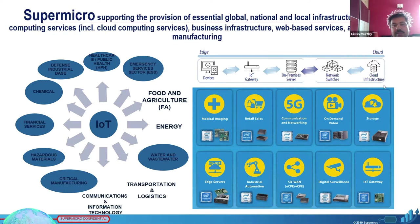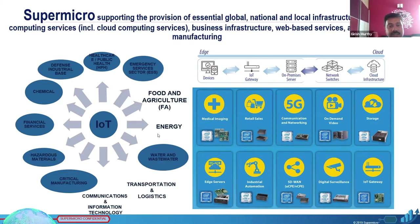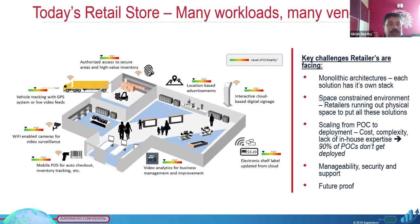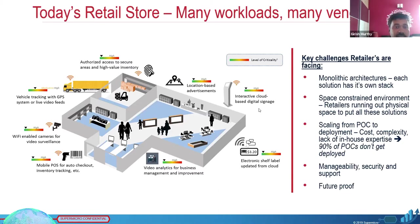Not only that — if there is an issue connecting to the cloud, you don't have to wait for a decision; the edge can act and sync up with the cloud later. As an example, here I've shown a retail store with different edge devices: mobile point-of-sale for auto checkout, inventory, Wi-Fi enabled cameras, GPS tracking on vehicles, location-based advertisements, and interactive cloud-based digital signage.